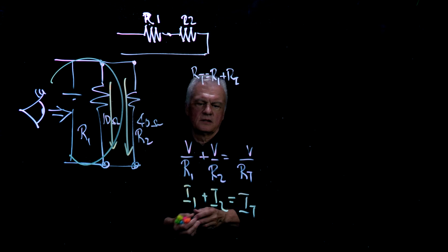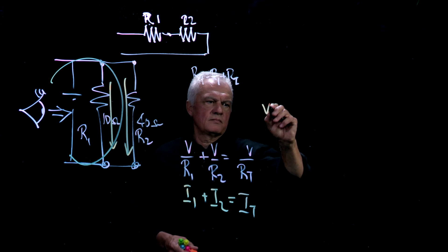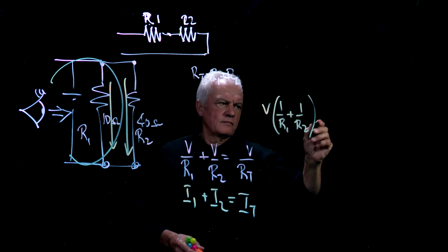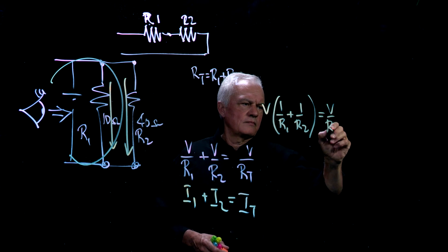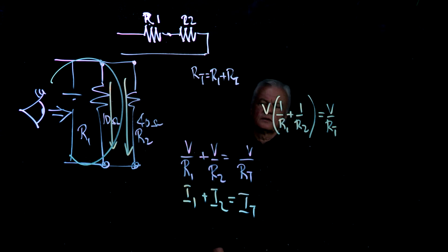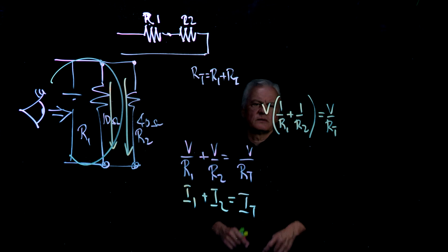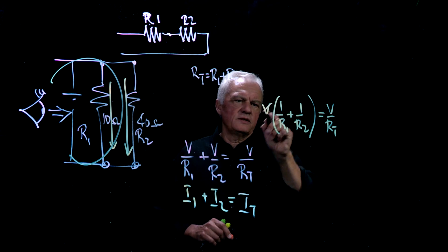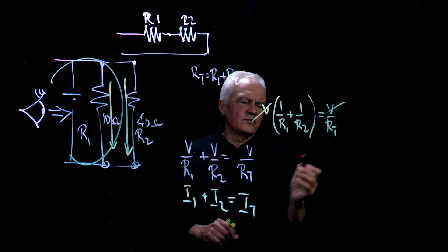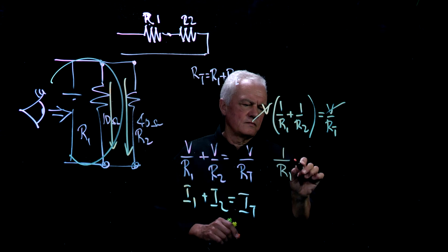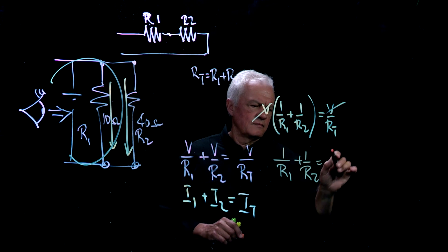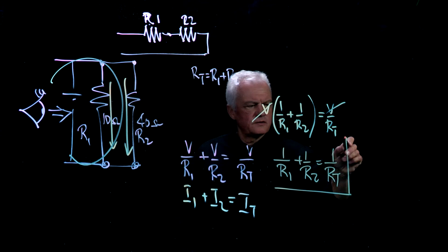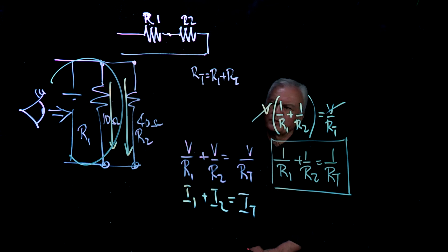Let's clean this equation up a little bit. So we've got here, I've just taken the common term out. Now if I divide this side by V and this side by V, they're going to cancel out. What I'm left with is, this is a formula that we use for two resistors in parallel.